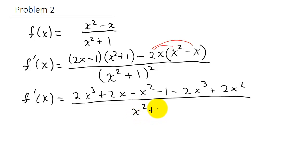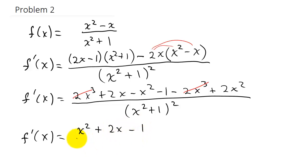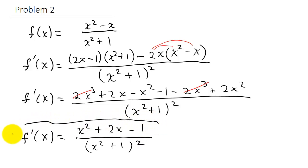all over (x² + 1) squared. The 2x³ terms cancel. We're left with: −x² + 2x² gives x², plus 2x minus 1, over (x² + 1) squared. So f′(x) = (x² + 2x − 1) over (x² + 1) squared. That would be our final answer. I hope this video has helped — check out my other videos, thanks.